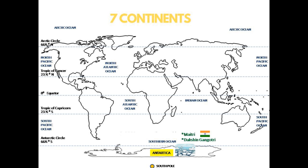And the last one is Antarctica. It comes under the Southern Hemisphere. The South Pole is almost in the center of Antarctica. As it is a polar region, it's completely covered with glacier. Due to its extreme weather conditions, there are no permanent human settlements. However, many countries have their research stations here. India too has its research stations — they are Dakshin Ganga 3 and Mai 3.